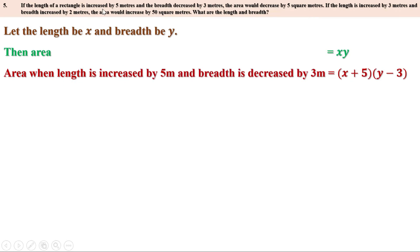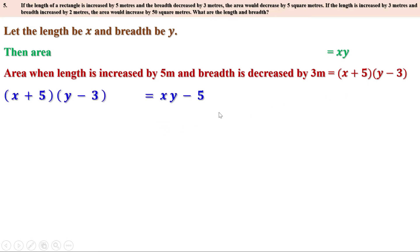Given that when the length is increased by 5 meters and breadth is decreased by 3 meters, the area would decrease by 5 square meters. The original area is xy. Decreasing by 5 means the new area is xy minus 5. Since both expressions represent the new area, they are equal: (x + 5)(y − 3) = xy − 5.